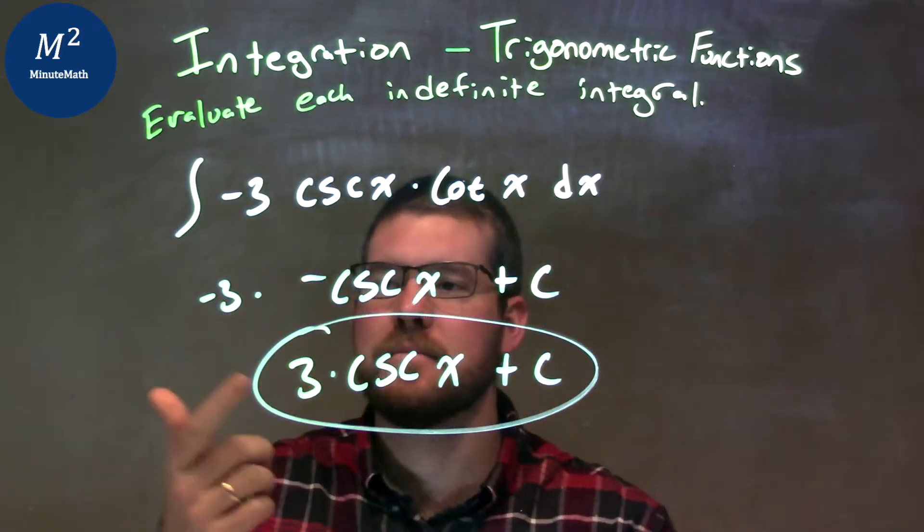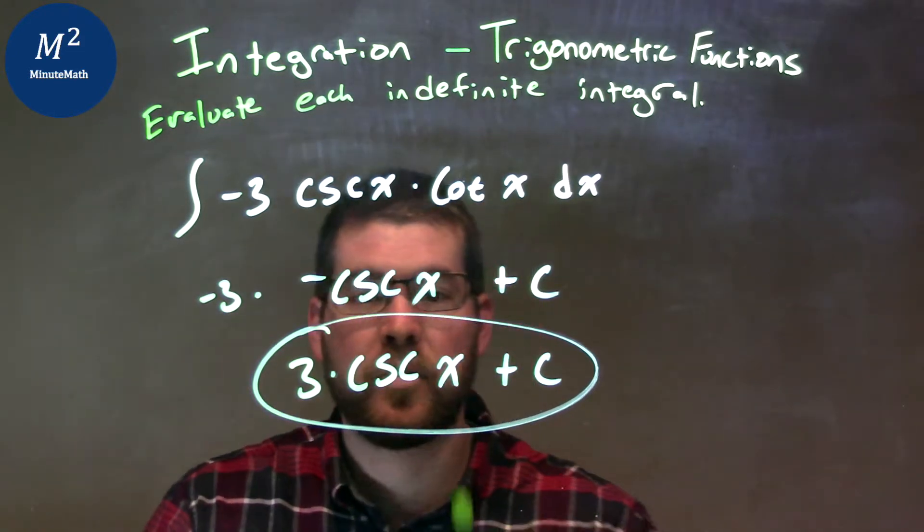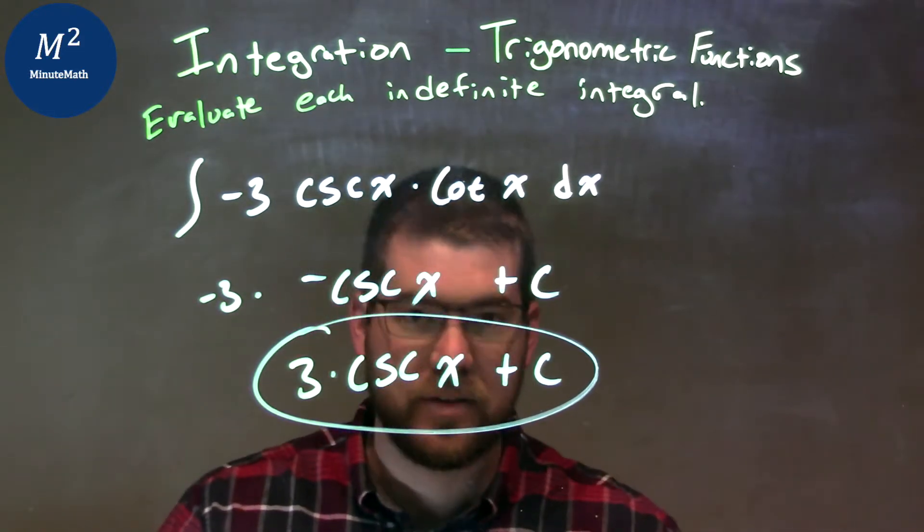I got all that together right here. Simplified, negative times a negative is a positive. So our final answer is just 3 cosecant x plus C.